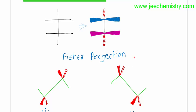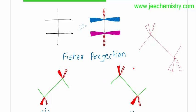There are two formats of Sawhorse formula. This is one format, this is a second format. Generally this format is used most of the time. How to draw this: one will be wedge and the other will be a dash. Here one will be the wedge, the other will be dash. This is the general format to draw the Sawhorse formula.